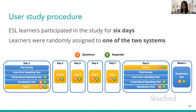Here's the user study procedure. Users first took a series of pre-tests including a free-form and a script-based speaking test. In the fixed usage study, users were asked to complete all conversations in one unit each day in strict order, mimicking classroom use. In the free usage study, users were given access to one unit each day and allowed to complete as many or as few conversations as desired, better simulating real-world conditions such as during self-study.